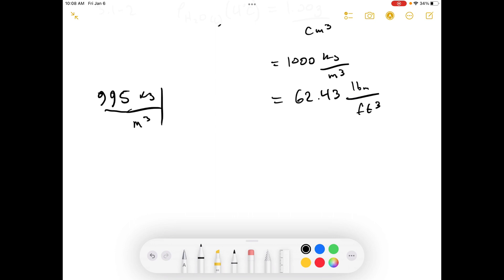So we'll go from kilograms. There's 1 kilogram to 2.205 pound mass. And in 1 meter cubed, there's 35.31 feet cubed. We'll get out our calculators. And this equals 62.13 pounds mass per feet cubed.